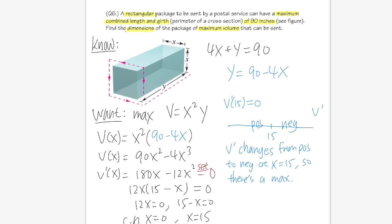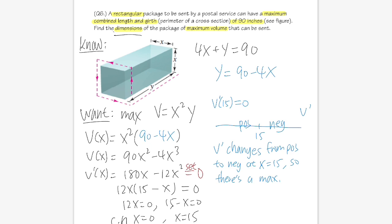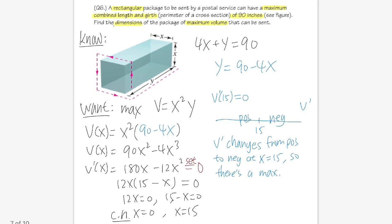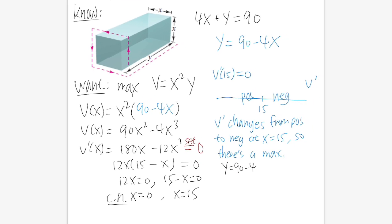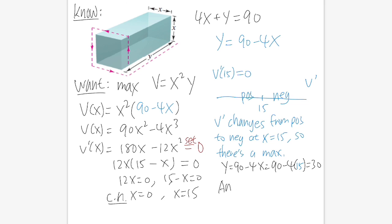Computing V(1) = 1·(6−2·1)² = 1·(4²) = 16 cubic feet. The largest possible volume is 16 cubic feet.